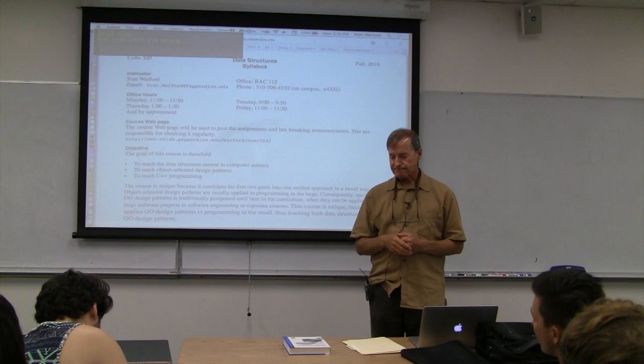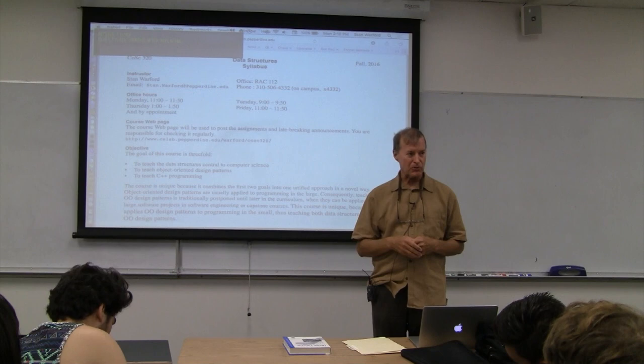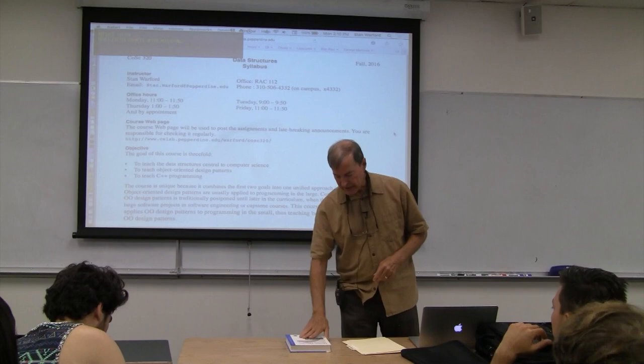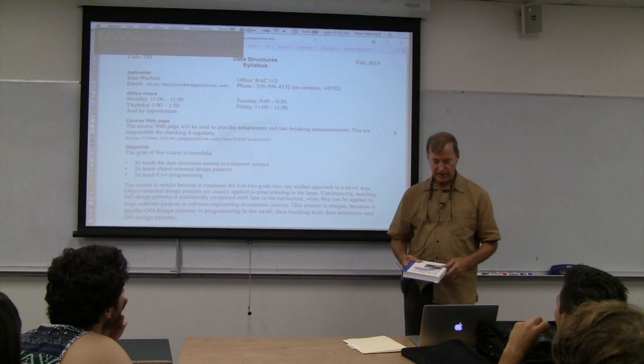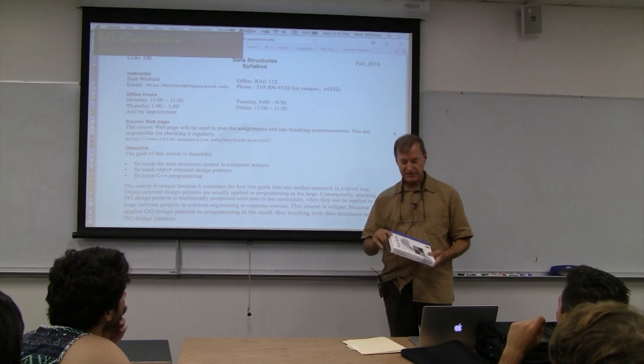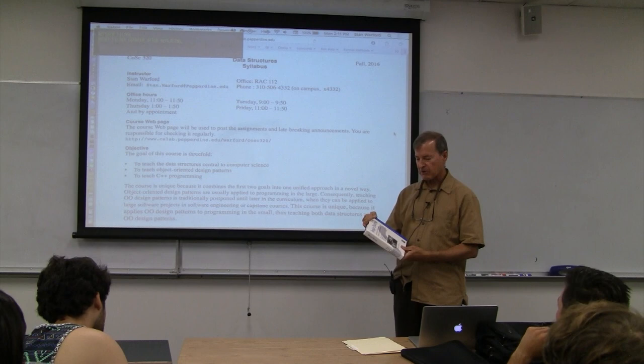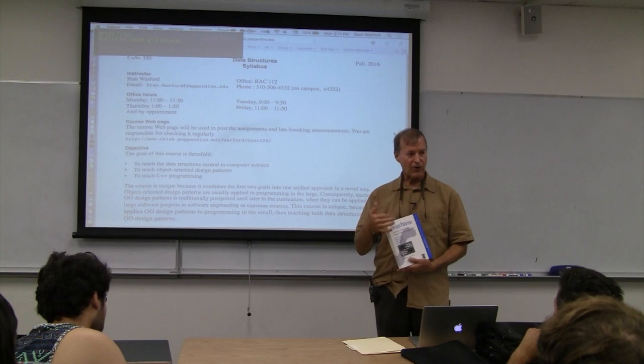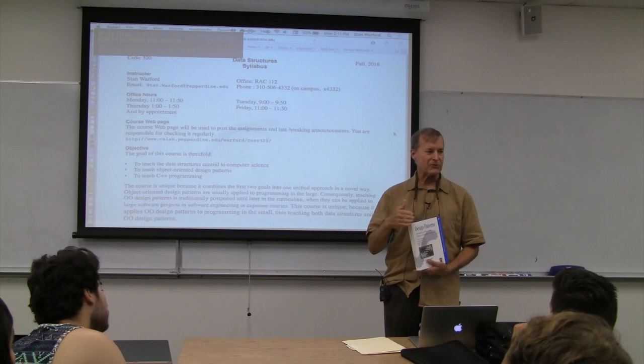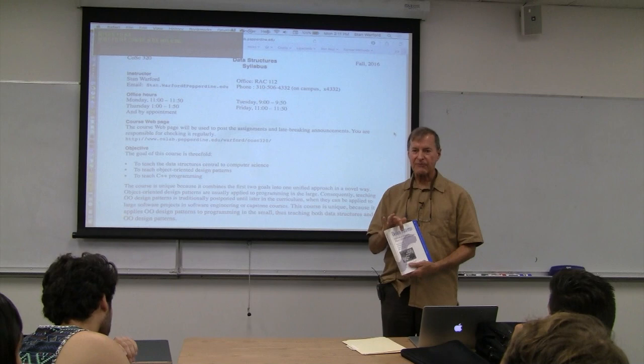I want to give you a heads up on a book called Design Patterns, subtitled Elements of Reusable Object-Oriented Software. It was written by four individuals: Erich Gamma, Richard Helm, Ralph Johnson, and John Vlissides. This is probably one of the most highly cited books in all of the computer science literature. It's either called the Gamma book after the first author, or because four people wrote it, it's called the Gang of Four.